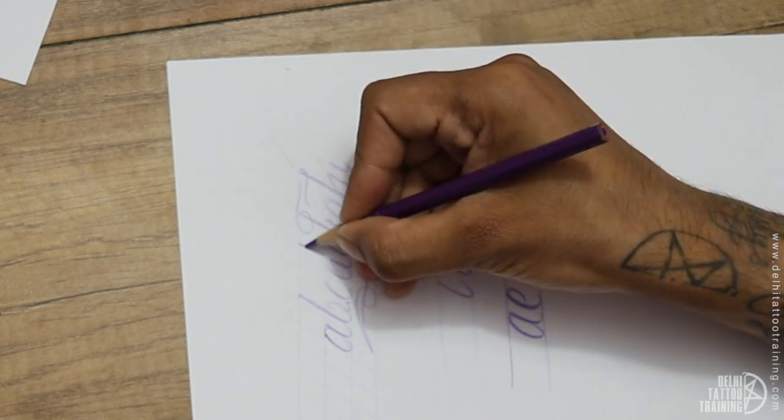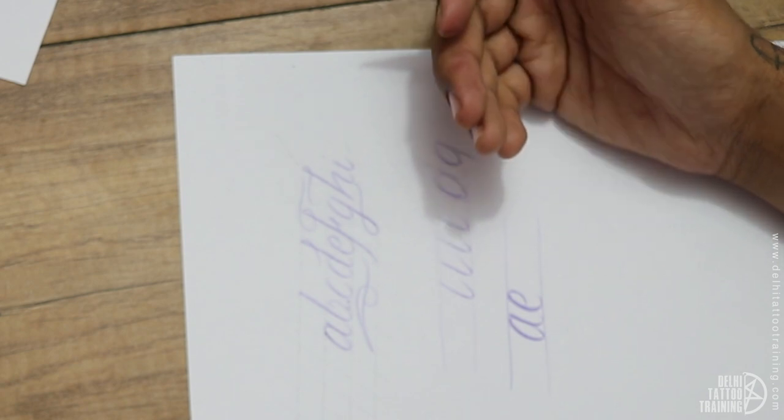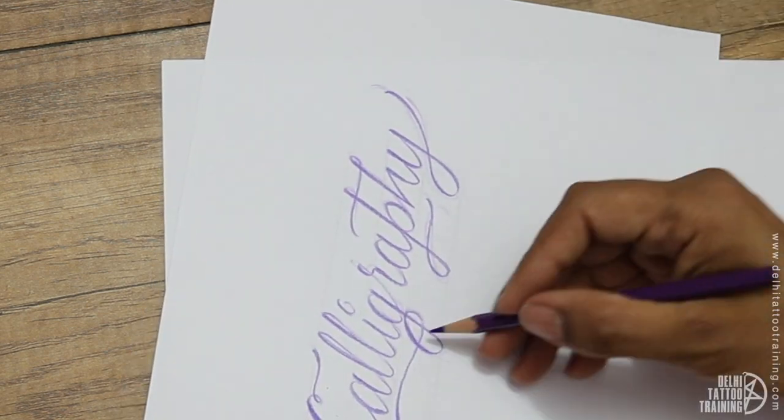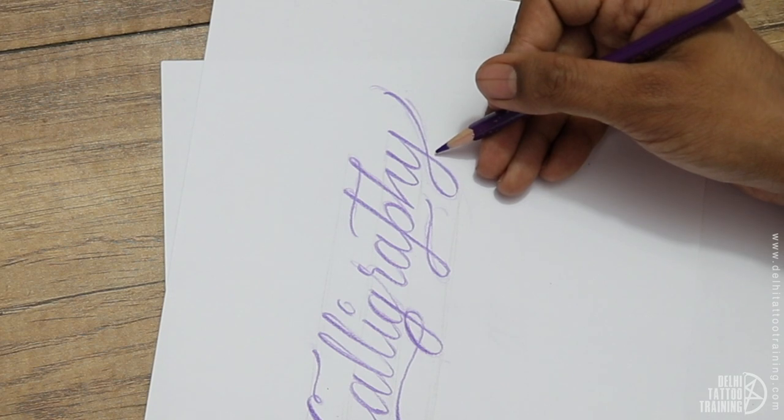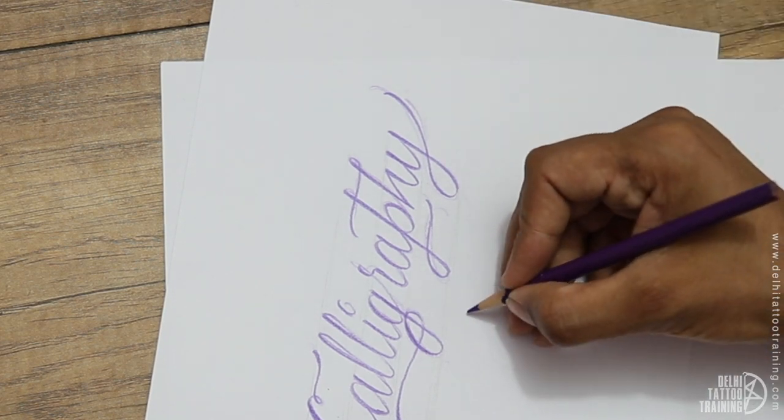If we draw something for the entire word, it will be called filigree. Now if you see in this word 'calligraphy,' I have not done any filigree. There are only flourishings. If I would have done anything below it, it would be called filigree. It was not required.